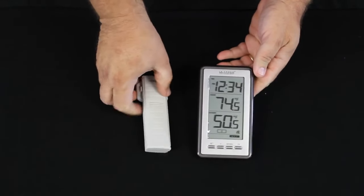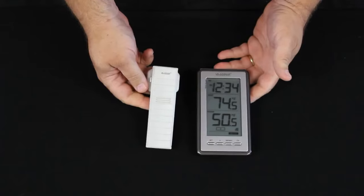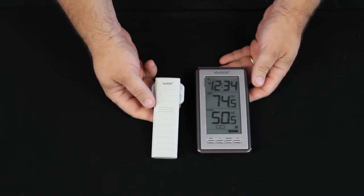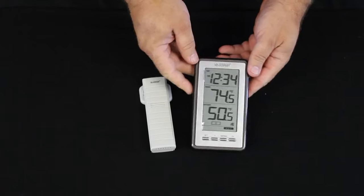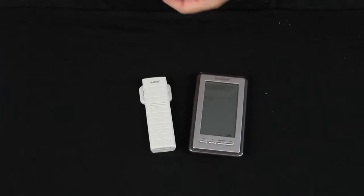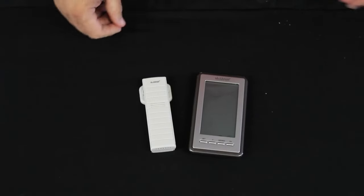Inside the package for the 9160 you'll find basically two devices. This is your outdoor sensor which will transmit the temperature to the weather station itself and this is the station. One of the first things we're going to do is take the protective covering off the station and there's no need to keep that.